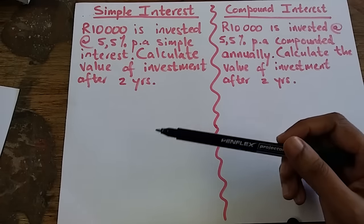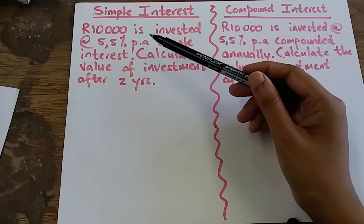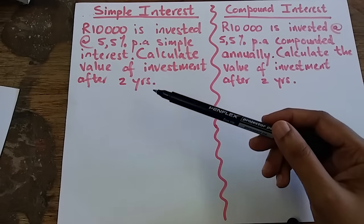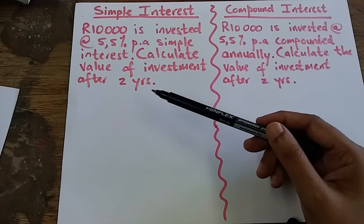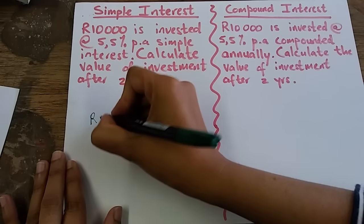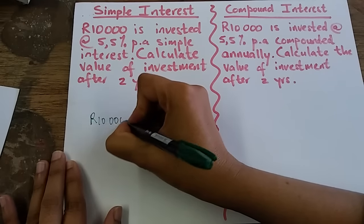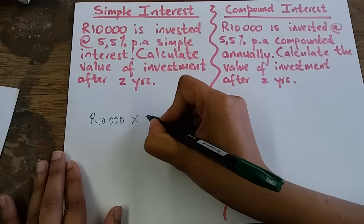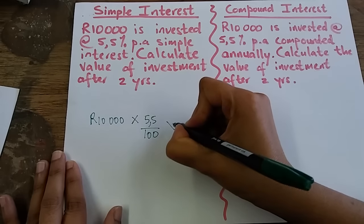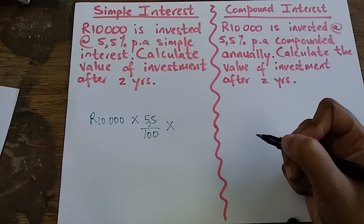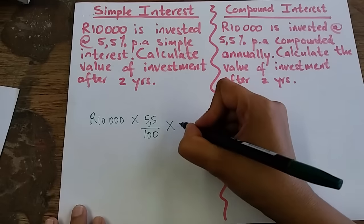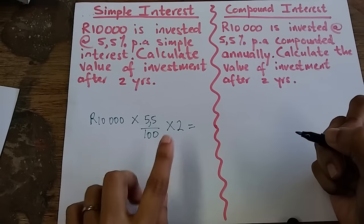Under simple interest: R10,000 is invested at 5.5% per annum simple interest. Calculate the value of the investment after two years. We take the principal amount of R10,000, multiply it by the interest rate of 5.5% (divided by 100), and then multiply by the term of two years.